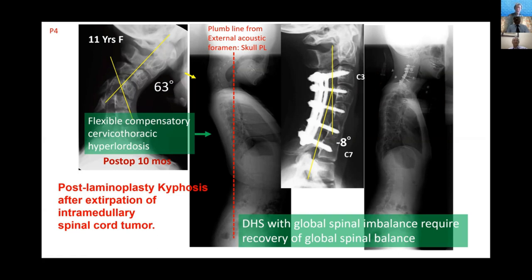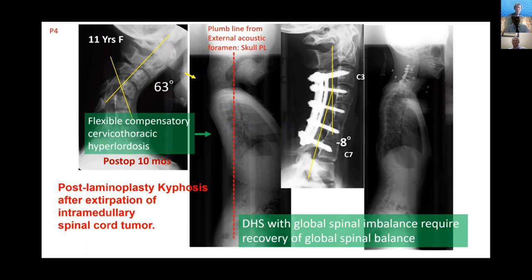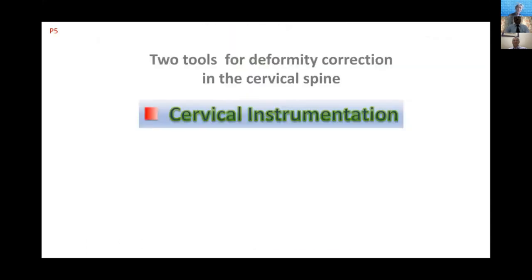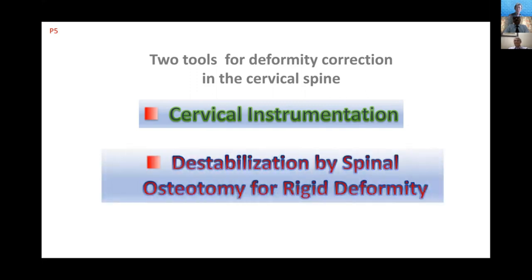If a patient has dropped head syndrome with global spinal imbalance, they require recovery of global spinal imbalance. We have two tools for deformity correction in the cervical spine: one is cervical instrumentation, and the other is destabilization by spinal osteotomy for rigid deformity.